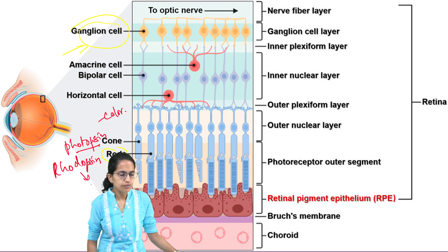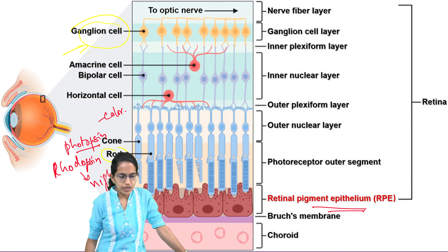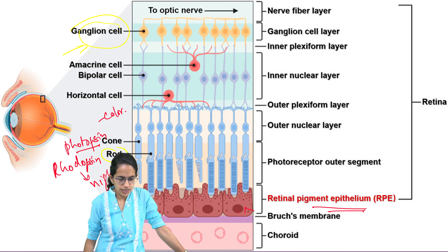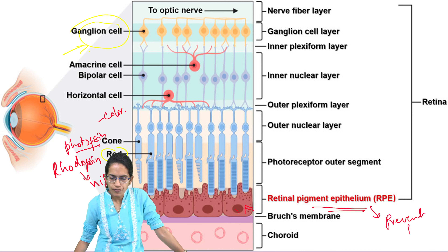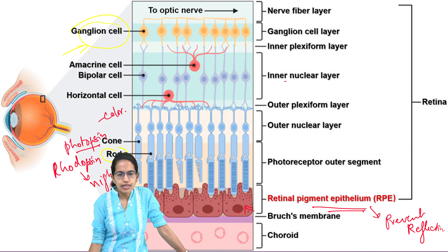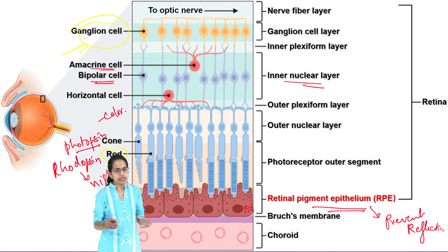The remaining part here is what is known as the choroid. Now choroid is a dark-colored, pigmented layer which absorbs the light that enters into the eye and basically stops it from reflecting further. So that's the main function of the choroid. We have already talked about the aqueous humor and the vitreous humor. So this is the basic structure.